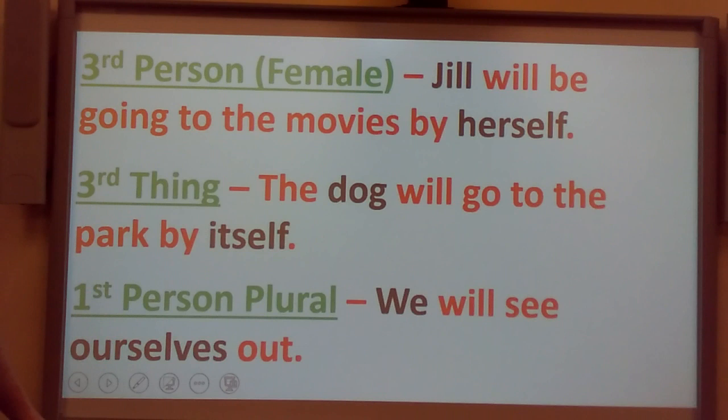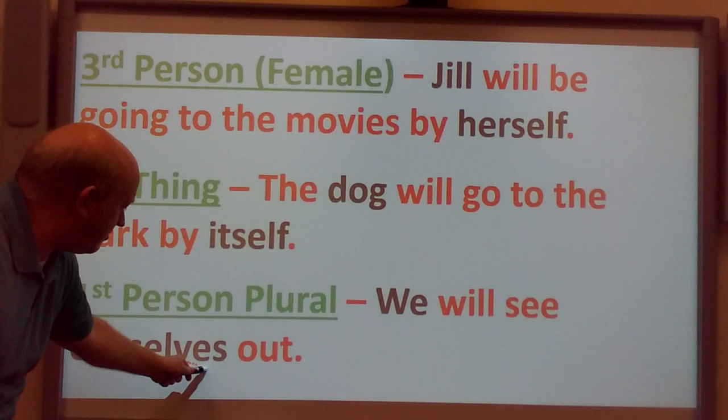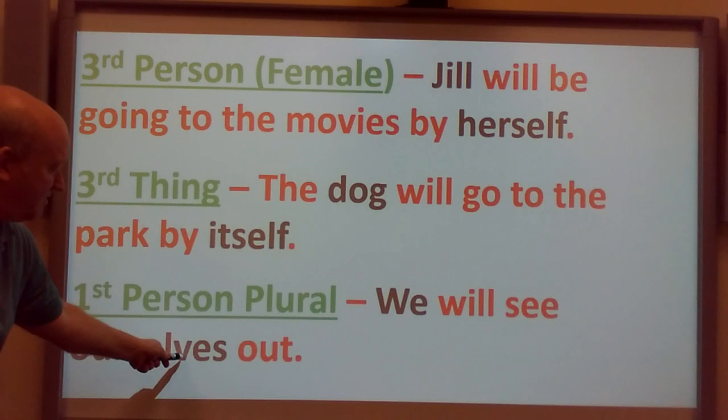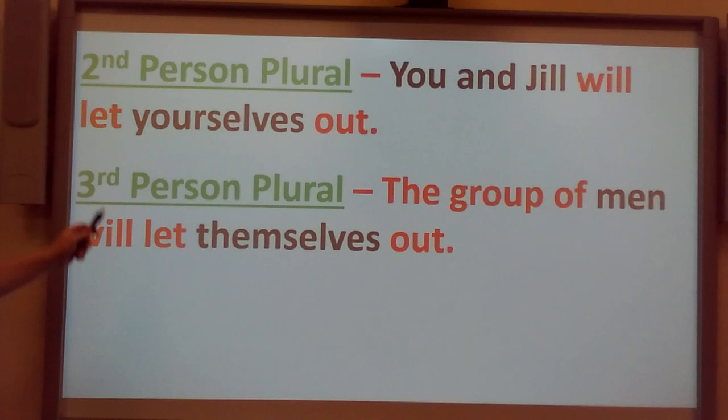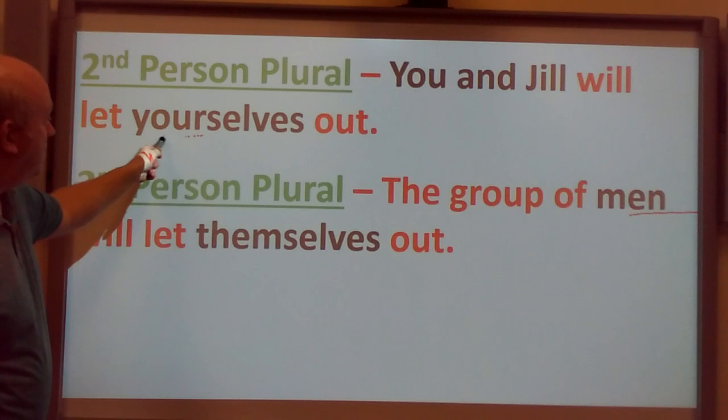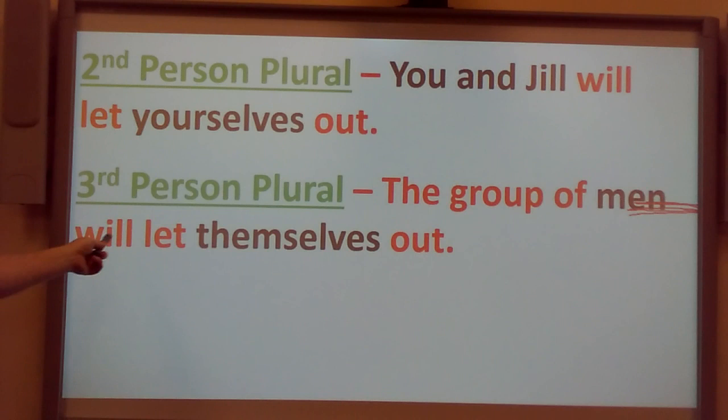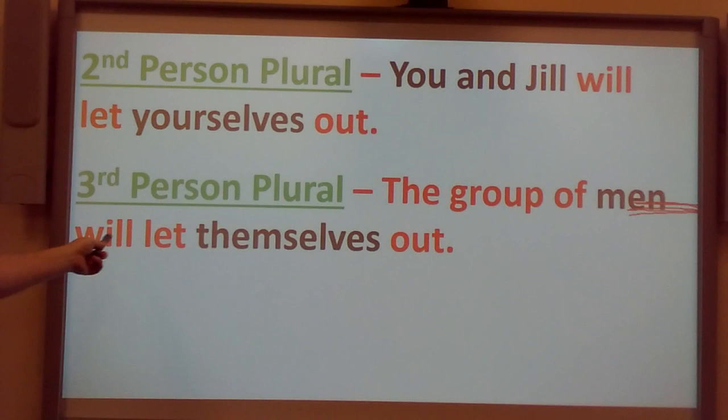First person plural: 'We will see ourselves out.' Here are those letters V-E-S. When you're talking about plural, you replace the F with V-E-S. Second person plural: 'You and Jill will let yourselves out.' There's the word 'you' in it. Third person plural: 'The group of men will let themselves out.' We're talking about more than two people. And that concludes pronouns.